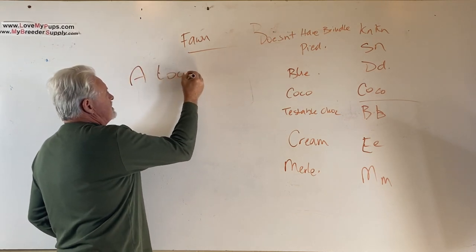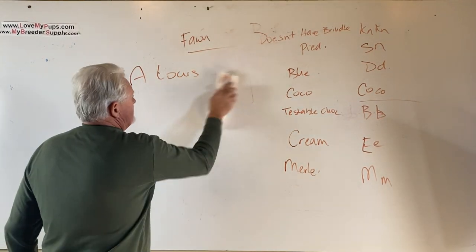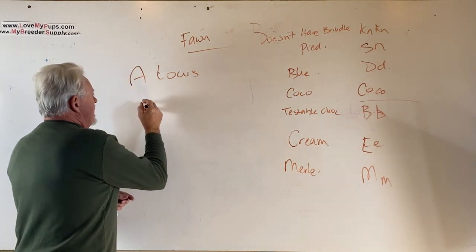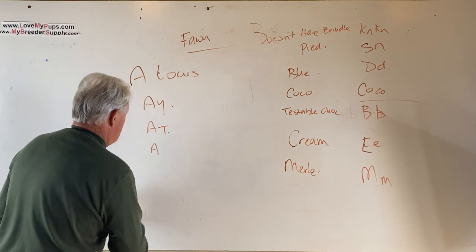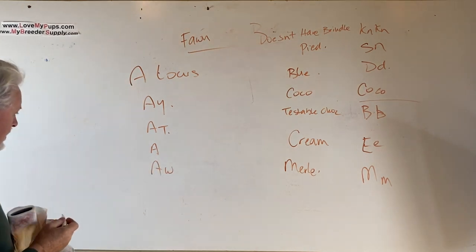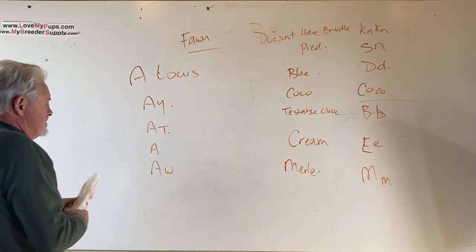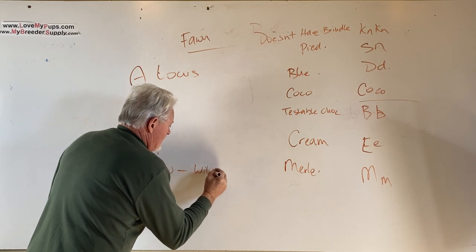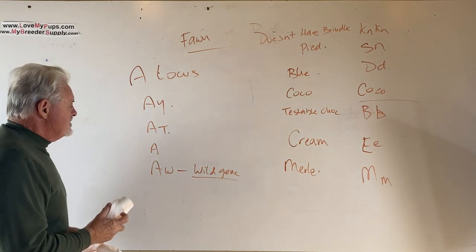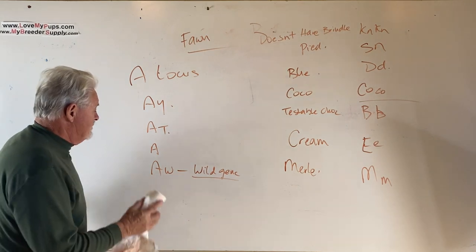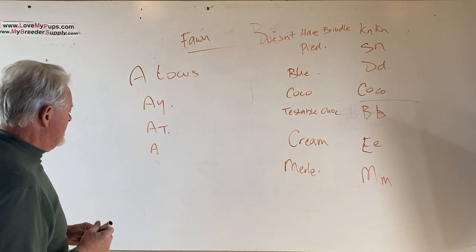So now we're going to talk about the A locus. The A locus is a bit confusing because there are actually four different characteristics that you can have on the A locus, and those are Ay, At, A, and Aw. You can have any combination of those in the A locus. You always have two genetics, and it could be any combination of those. I'm not going to talk about Aw—this is a wild gene and we don't see this in Frenchies. We're just going to take it off the board right now because it doesn't show up in Frenchies.